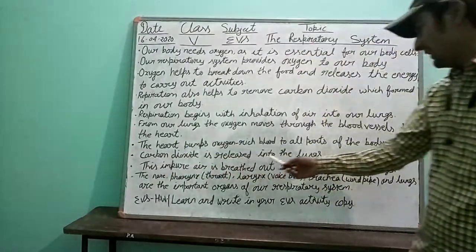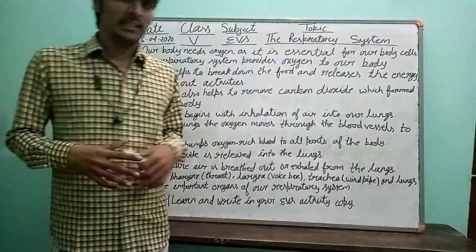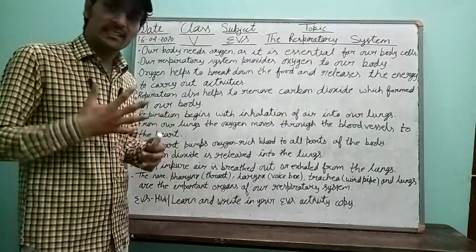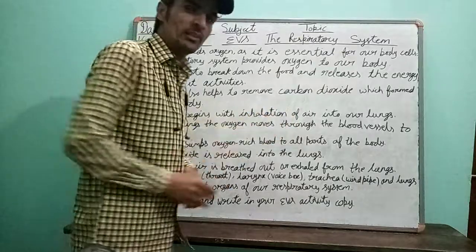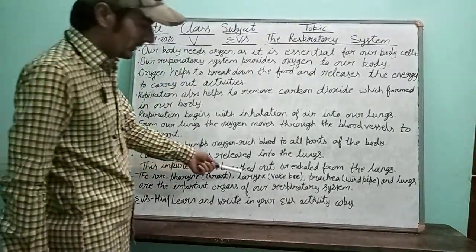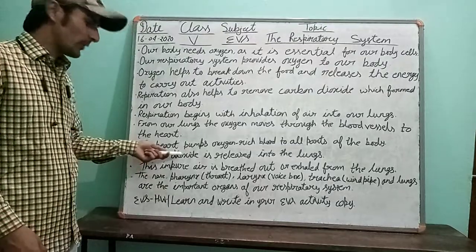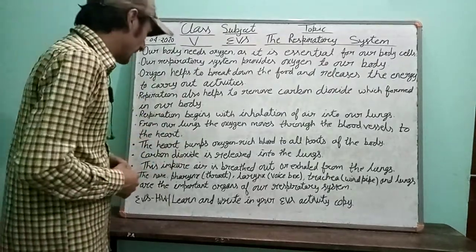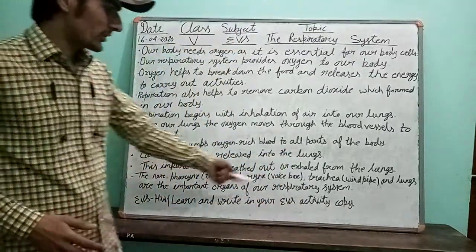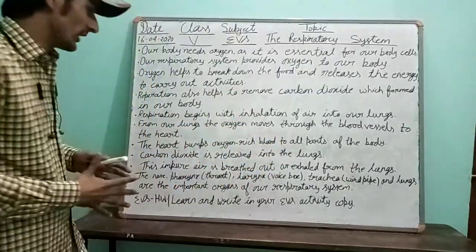Carbon dioxide is released into the lungs. When carbon dioxide is produced inside our body, it is sent to the lungs to go out of the body. This impure air — carbon dioxide — is breathed out, or exhaled, from the lungs. This process is known as exhalation.